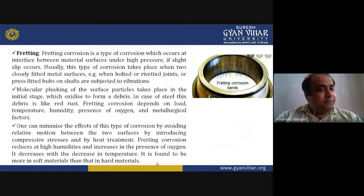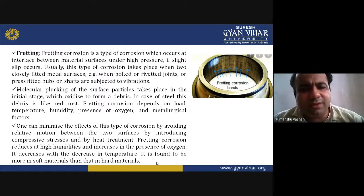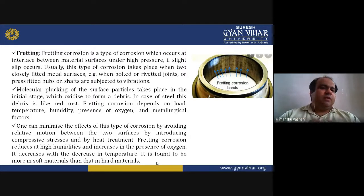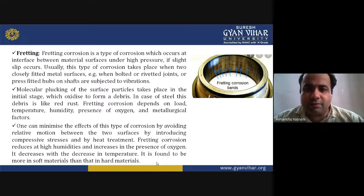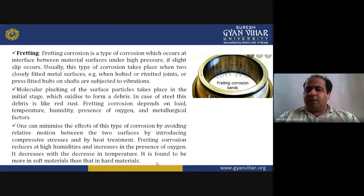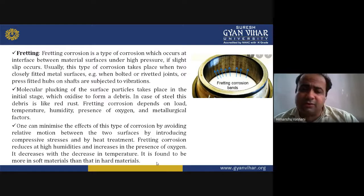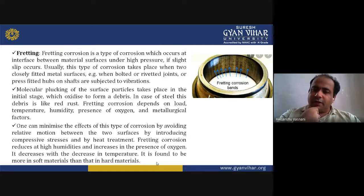Fretting corrosion is a type of corrosion which occurs at the interface between material surfaces under high pressure when slight slip occurs. In the diagram, fretting corrosion bands are shown with the help of arrows and vertical lines.